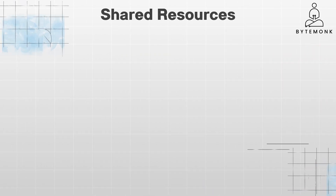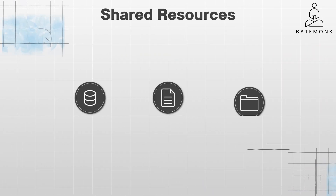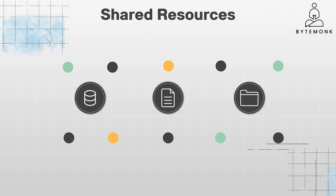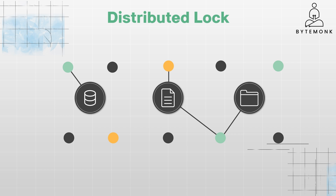So for shared resources such as a database, a file, or a specific piece of data, you must ensure that only one node or process accesses and modifies this resource at a time. That's the problem distributed locking solves. In essence, a distributed lock is a mechanism that allows only one node or process in a distributed system to acquire a lock on a shared resource, preventing race conditions and ensuring data integrity when multiple nodes try to access and modify the same resource concurrently.